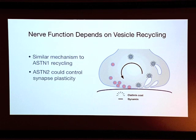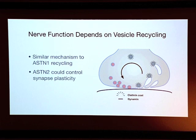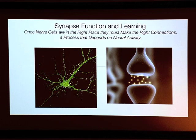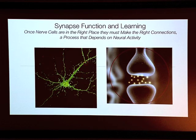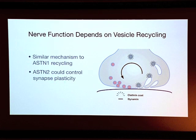These little synapses are interesting because the mechanism of recycling I showed earlier in the migrating cell also applies to the synapse. Little packets of information flowing across are in little vesicles, and these vesicles are recycling in much the same way that the adhesion proteins recycle in the migrating cell. The main thing we're working on right now is whether astrotactin 2 is controlling synaptic plasticity by controlling the formation and elimination of these synapses, possibly in a way that involves the recycling of these vesicles.